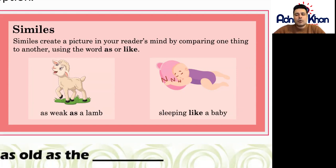For example, as weak as a lamb. We're comparing the word weak to lamb and using the word as in the middle, which means this is a simile.